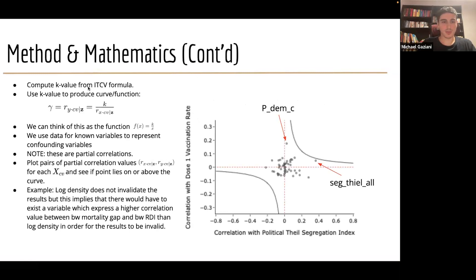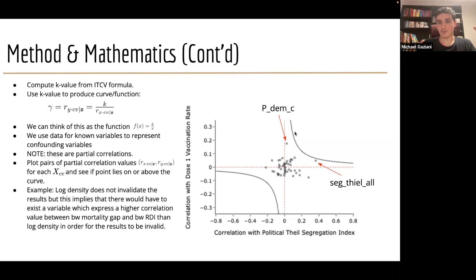We compute our k value and use it to produce the curves on the graph. The y-axis is the partial correlation that y has with the confounding variable controlling for selected controls z. The denominator x is your partial correlation coefficient with x and your confounding variable controlling for selected controls z. We can think of this as the function f(x) = k/x. All points along these curves are values that would make the coefficient of our x variable of interest statistically insignificant.